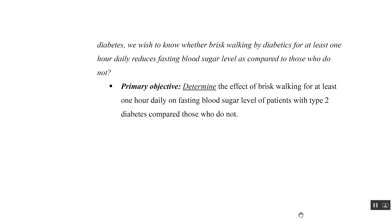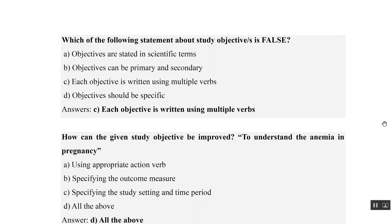This is how we convert a research question into a primary objective. Now, which of the following statements about study objectives is false? Objectives are stated in scientific terms — true. Objectives can be primary and secondary — true. Each objective is written using multiple verbs — that is wrong; we should not use more than one verb in any objective, so C is the answer. An objective should be specific — true.